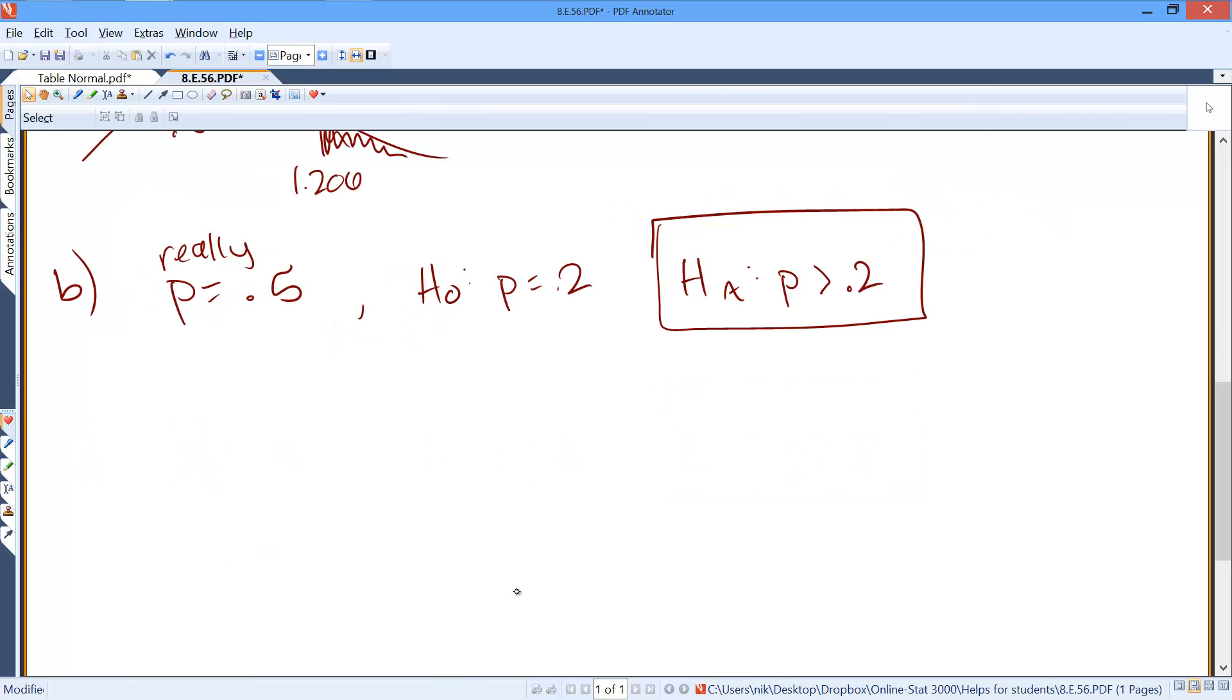Again, we know our population proportion is 0.5, that's the true population proportion. Now, our null hypothesis is 0.2, our alternative hypothesis is p is greater than 0.2, and our significance level is alpha equals 0.01.